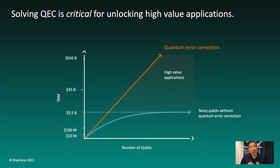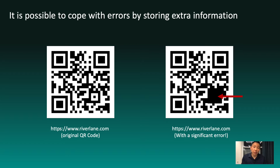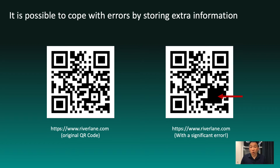At this point, I think it's important to give everyone a high-level intuition about what quantum error correction involves. I'll start with a demonstration using a much more familiar classical example. On the left, I have a QR code that will take you to the Riverlane website. What might be surprising is that I can cover up a fairly large chunk of the QR code with a black rectangle, effectively changing a bunch of the white squares to black squares, and the QR code will still work. Go ahead and try scanning the QR code on the right — you can check that it still works. So all error correction, whether classical or quantum, revolves around storing extra information. In the QR code on the right, there's enough extra information in the error-free areas to let your phone work out that there's been an error and get the original data out.